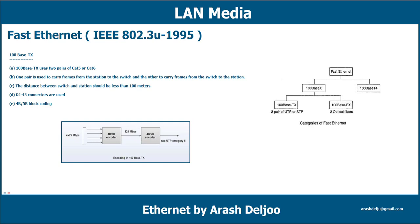For 100Base-TX, IEEE 802.3, this standard requires two pairs of unshielded twisted pair (UTP) category 5, or two shielded pairs (STP). You can use STP or UTP cable, and only two pairs from four pairs are used.